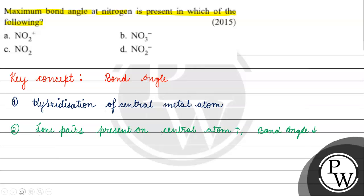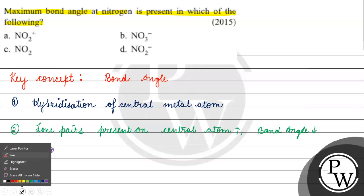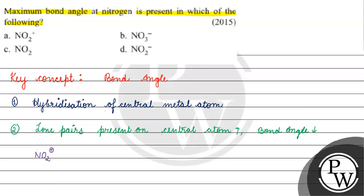Now, if we are talking about NO2+, we determine hybridization using the hybridization formula, which is half the valence electrons of the central atom. Nitrogen has 5 valence electrons, and we have a positive charge, so we subtract for the positive charge.